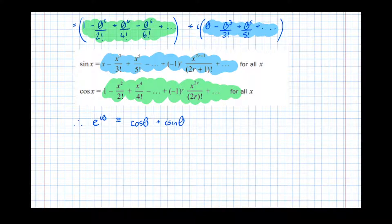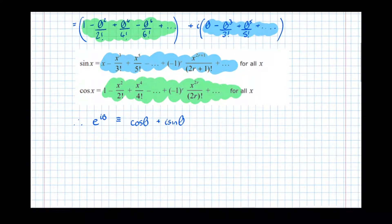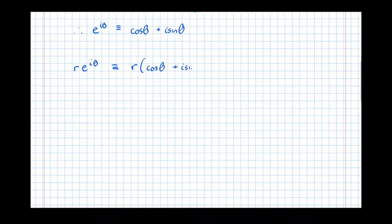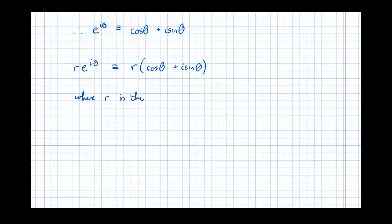This is a really significant result in maths, because it allows us to write complex numbers in a more indices-friendly form. So when we write a complex number in the form r e to the i theta, we've just proved that this is identical to r times cos theta plus i sine theta. The significance of this is that when it's written in this form, we can instantly read off the argument and the modulus — where r is the modulus and theta is the argument of the complex number.